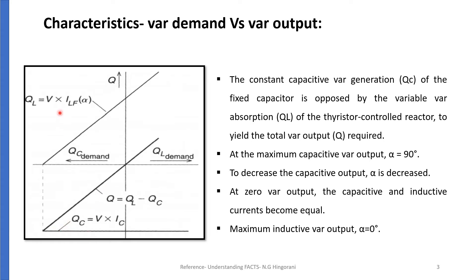QL is the Reactive Power Absorbed by the Inductor. It is given by QL = V × ILF(alpha). This fundamental current of TCR is a controllable quantity. By controlling this fundamental current we can control QL and hence we can control the system requirement of reactive power, i.e. Q = QL minus QC. QC is a fixed value whereas QL is a variable value. QL is varied in such a way that the required Q is attained.